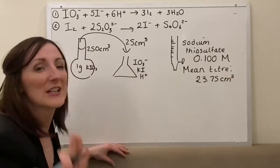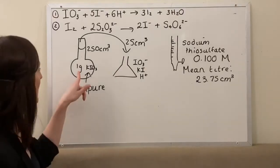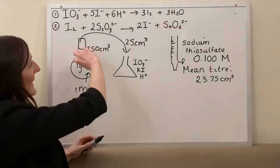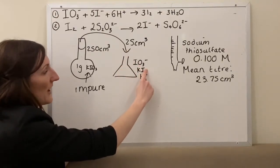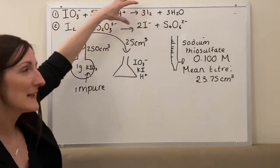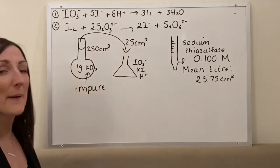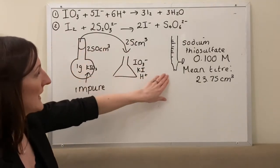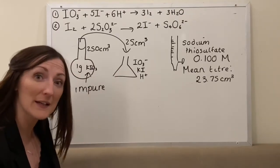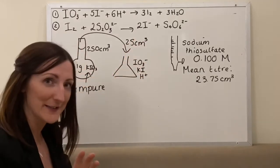To recap: we dissolved one gram of impure potassium iodate in 250 cm³ distilled water, took 25 cm³ of that, added excess potassium iodide and acid to produce iodine in reaction one, then titrated that iodine with sodium thiosulfate in reaction two. We add starch near the end point when it has gone pale yellow — it goes blue-black, and the end point is when the blue-black colour disappears because all the iodine has been reduced to iodide.